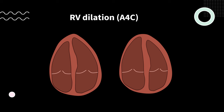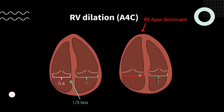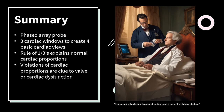Here we see a patient with normal heart on the left and a patient with pulmonary hypertension on the right. The RV should be approximately one-third less than the LV, but here there is about a one-to-one ratio — in fact, the RV is slightly bigger than the LV — and the apex is now dominated by the right ventricle instead of the left. In summary, to perform bedside cardiac ultrasound: use your phased array probe, utilize three cardiac windows to make four basic cardiac views, use the rule of thirds to assess normal cardiac proportions, and look for violations of the rule of thirds to identify cardiac or valve dysfunction.